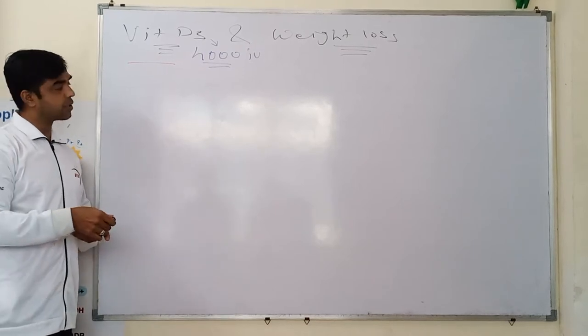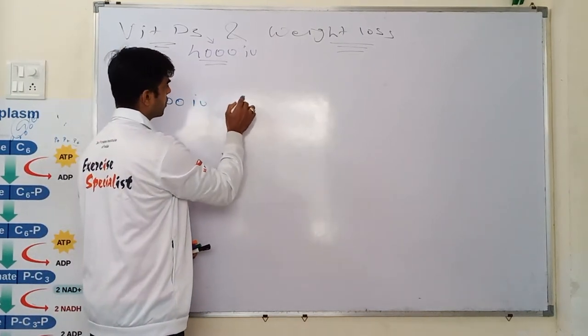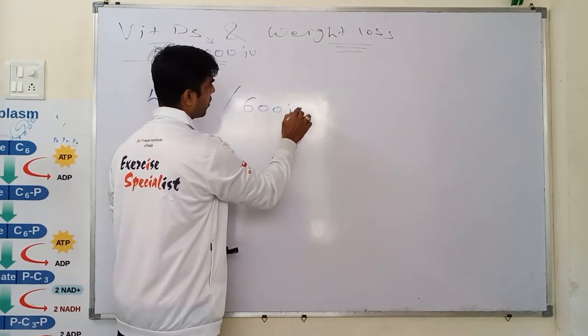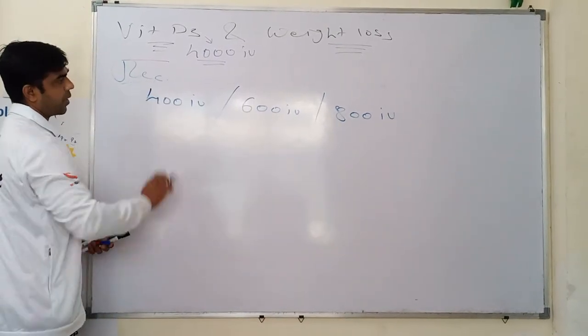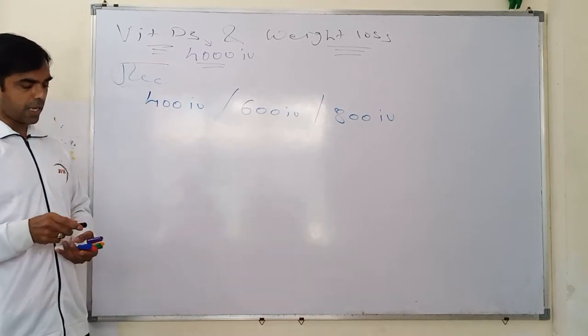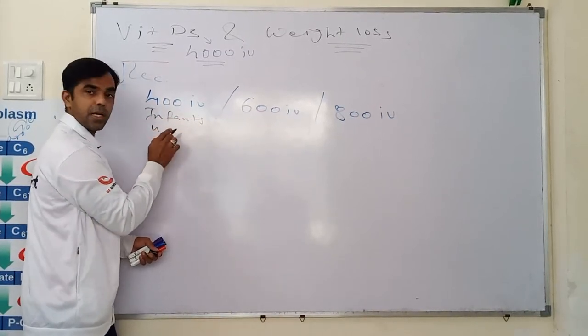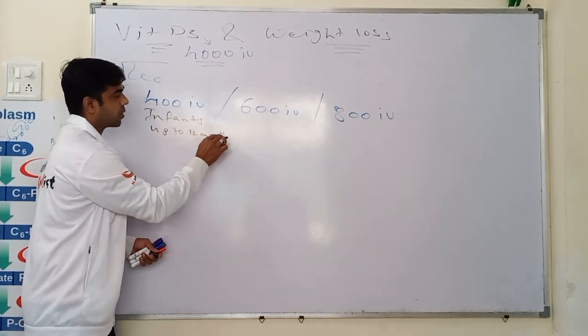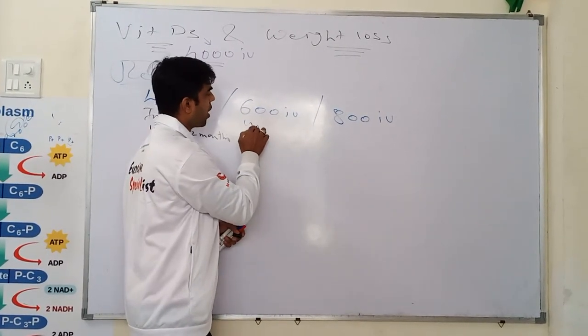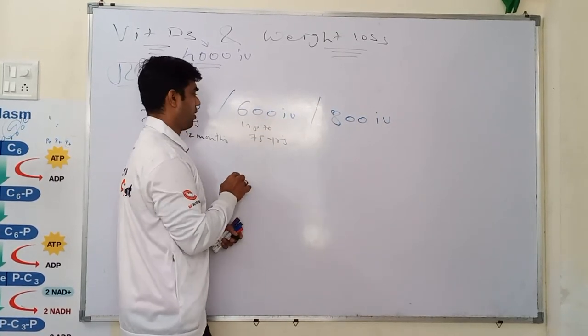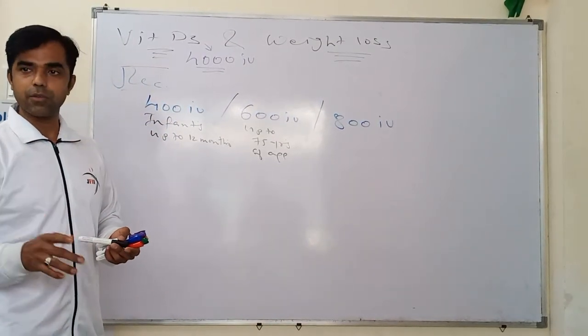So recommended doses are from 400 IU to 600 IU to 800 IU. So 400 IU is for infants, 12 months baby up to 12 months, and 600 IU is for up to 75 years of age, and 800 IU is above 75 years.